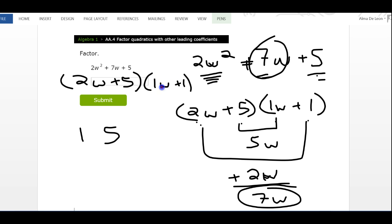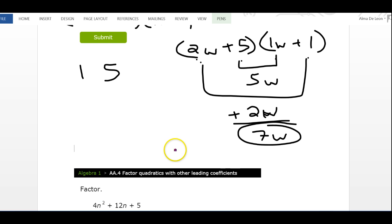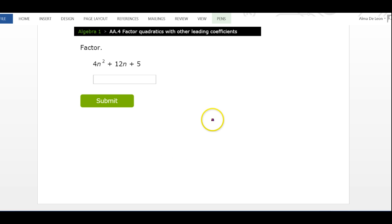Let's do one more. Again, I'm going to rewrite my trinomial on the side: 4n² + 12n + 5.